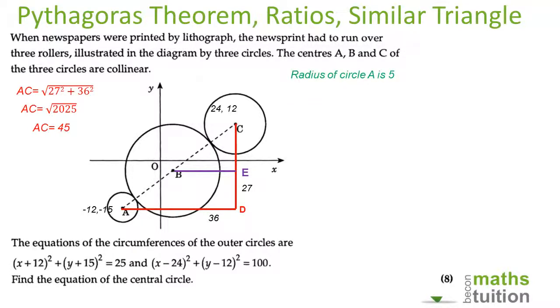The radius of circle A is 5, the radius of circle C is 10. So if CA is 45, it means that the diameter of B is 30 because 45 minus 10 minus 5 gives you 30, which means the radius of circle B is 15.